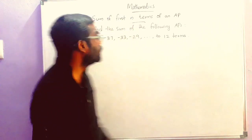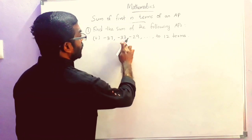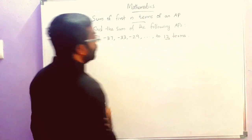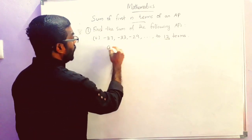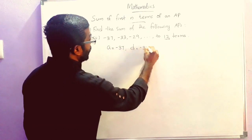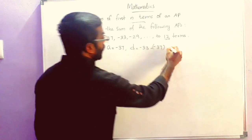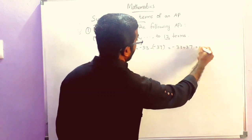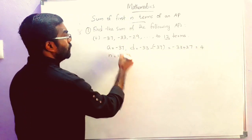The next question is: minus 37, minus 33, minus 29, etc. We have to find the sum of the first 12 terms. Here A is equal to minus 37, D is equal to minus 33 minus minus 37, that is minus 33 plus 37, which is equal to 4. And N is equal to 12.